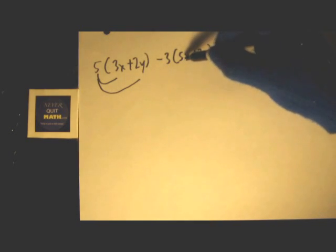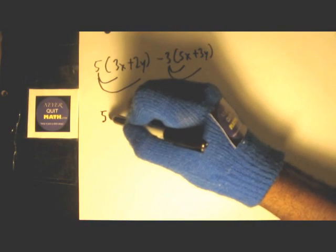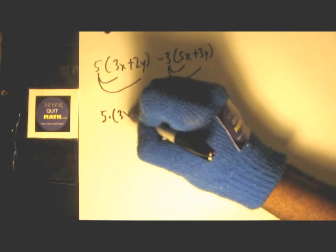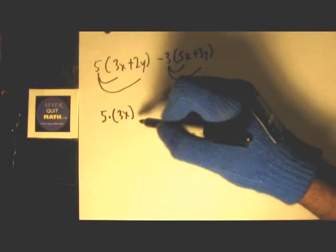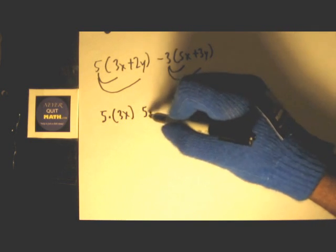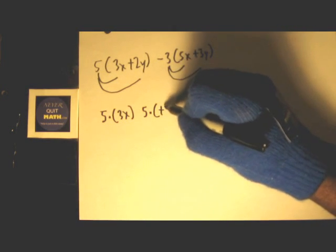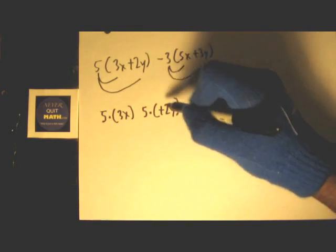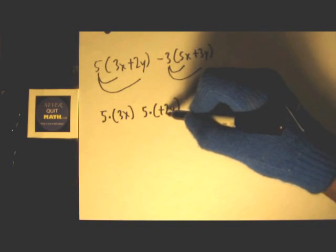Same thing over here - you can't add them, so we're gonna distribute that negative 3. As you distribute, you distribute with sign. So we're gonna have 5 times (3X), and then 5 times positive 2Y. Always bring down that plus 2Y.